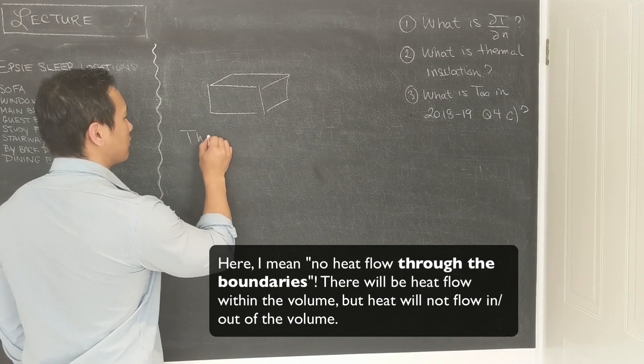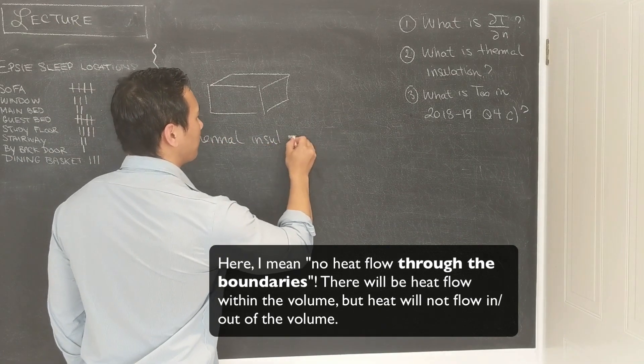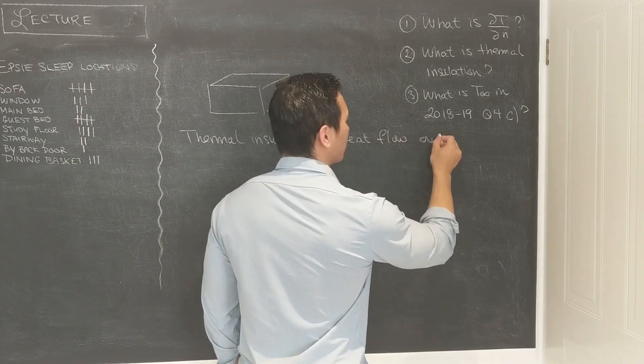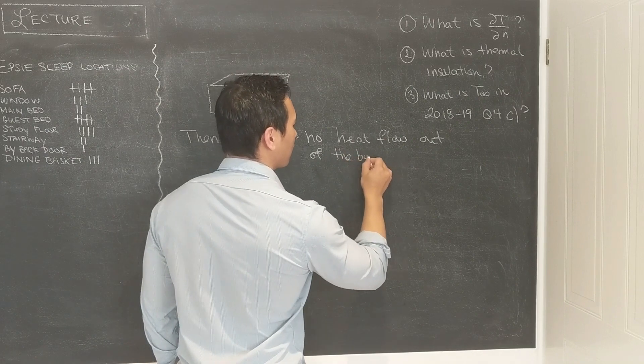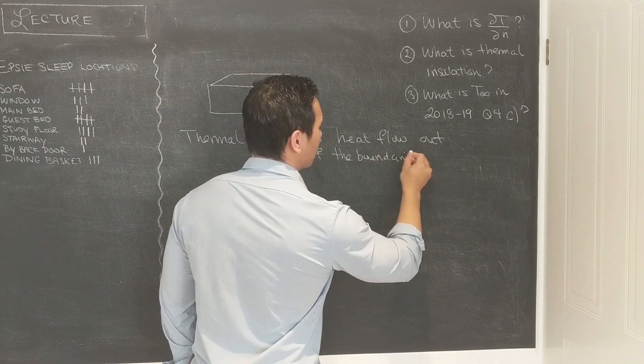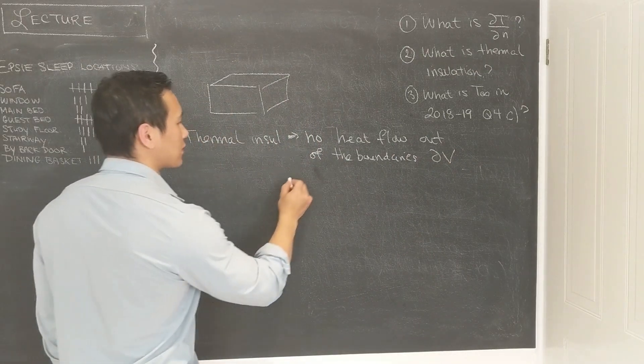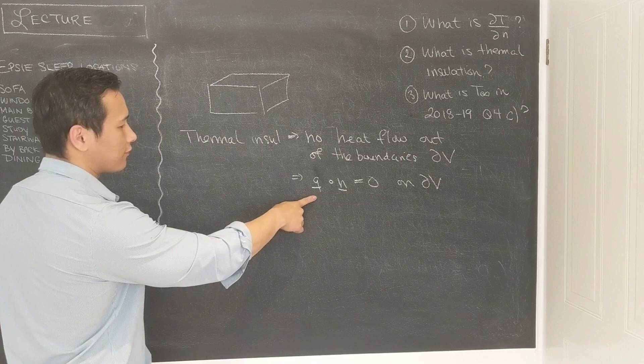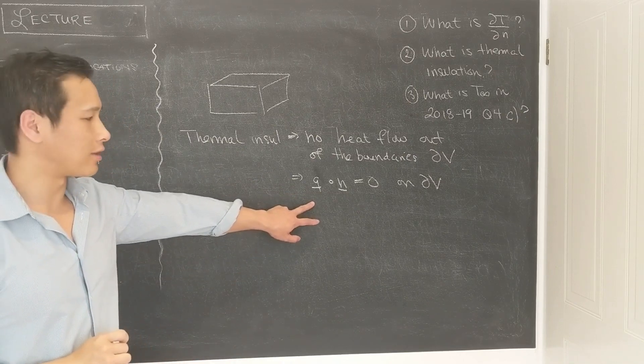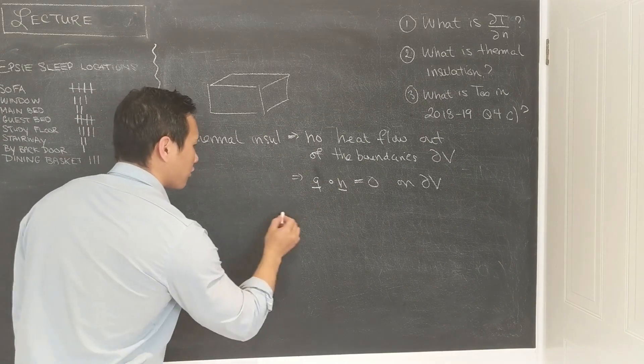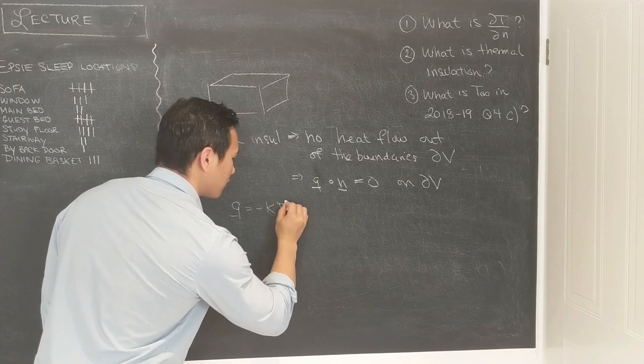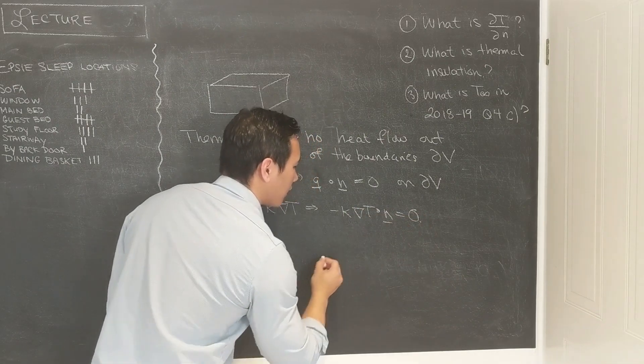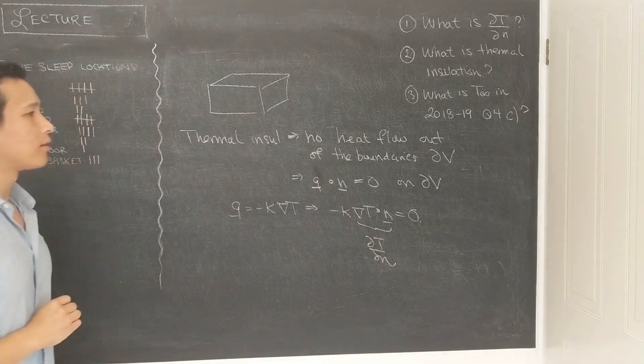So thermal insulation means that there's no heat flow out of the boundaries. So here the boundaries are, we'll write that as dV, and so this tells you that you have q dot n is equal to 0 on dV. q is the heat flow vector. And you know that by Fourier's law q is equal to minus k grad t. That tells you that you have minus k grad t dot n equal to 0, and this is just dT/dn.